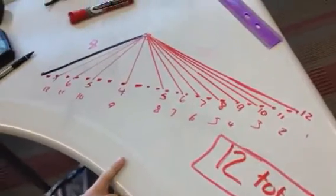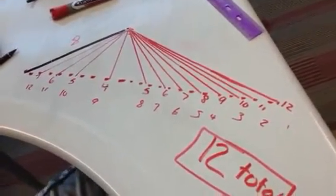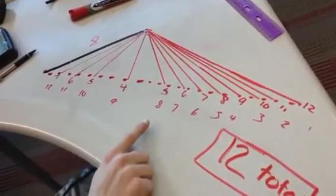And then instead of drawing separate triangles, I just kept tracing the pipe cleaner. So then I had like 11, 10, 9, 8, 7, 6, 5, 4.